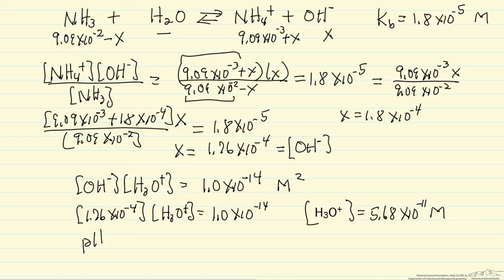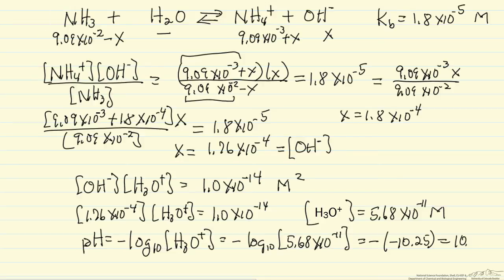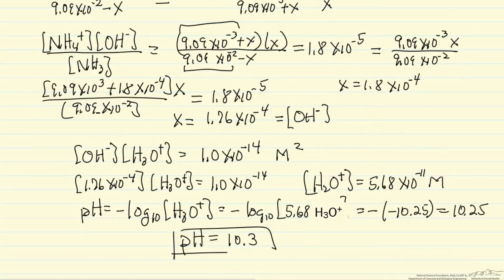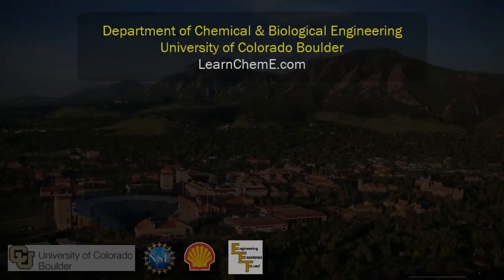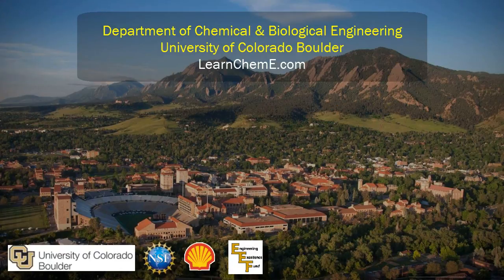So I can calculate the pH as minus the log base 10 of the concentration H3O plus, so that's minus the log base 10, 5.68 times 10 to the minus 11, this is 10.25.